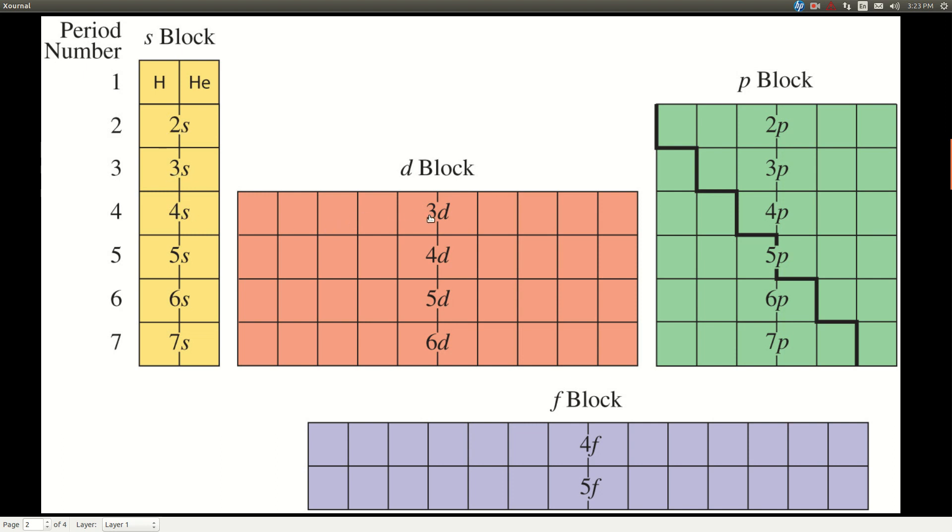2, 3, 4, and so on. With the D block, the sub level is 1 less, this 3D is in the 4th row, 4D is in the 5th row, and so on.